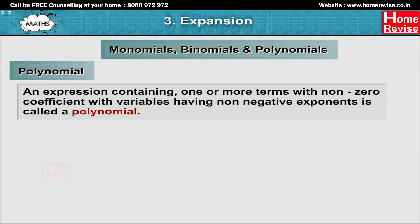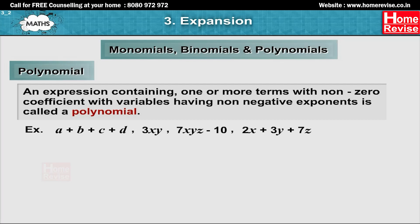Polynomial: An expression containing one or more terms with non-zero coefficients and variables having non-negative exponents is called a polynomial. For example, a plus b plus c plus d, 3xy, 7xy, z squared minus 10, 2x plus 3y plus 7z, etc.